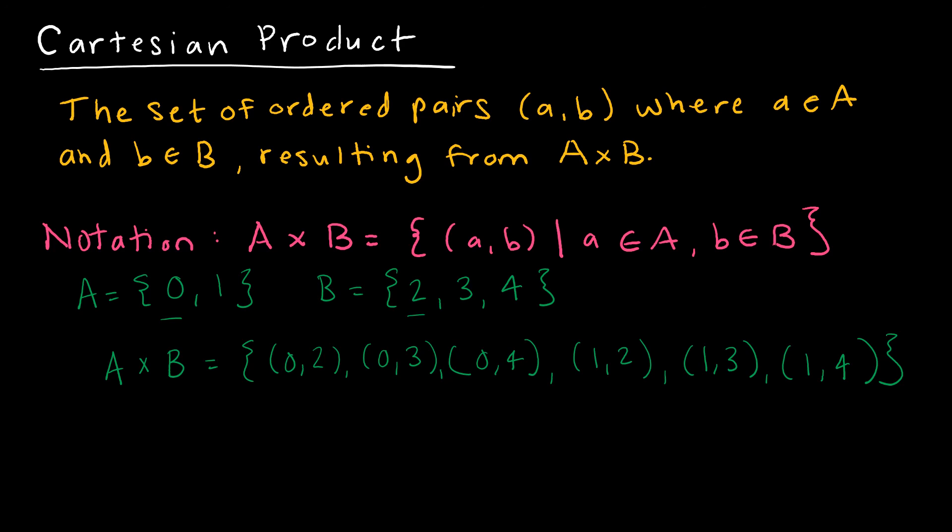Again, I said later on we'll talk about relations, but let's say I had a subset R that included just 0, 2 and 1, 2. This would be considered a relation because it is a subset of that Cartesian product.